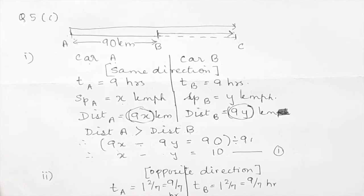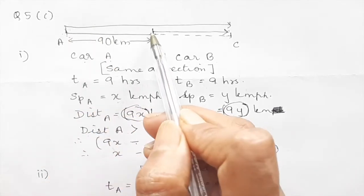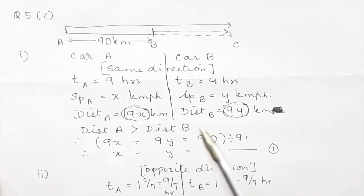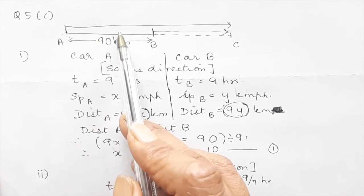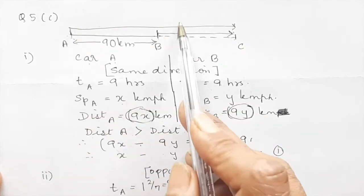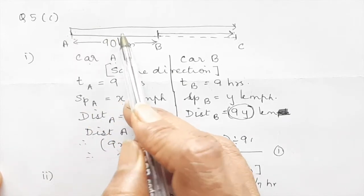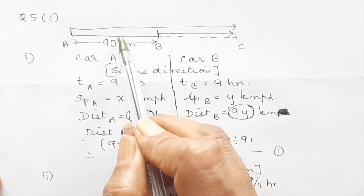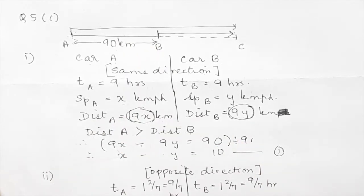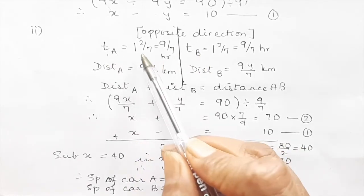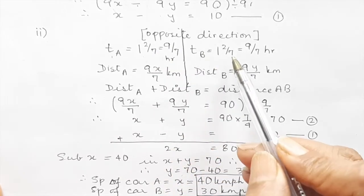If they go in the opposite direction, car A goes one way and car B goes the other way. They meet after 1 and 2/7 hours, which is 9/7 hours. A is going to travel more distance and B less, but the time taken is the same. So the distances of A and B together total 90 kilometers. Time for A is 9/7 and time for B is also 9/7.